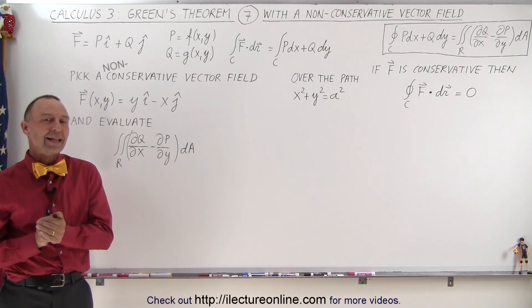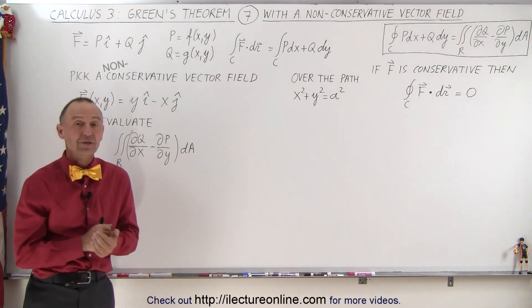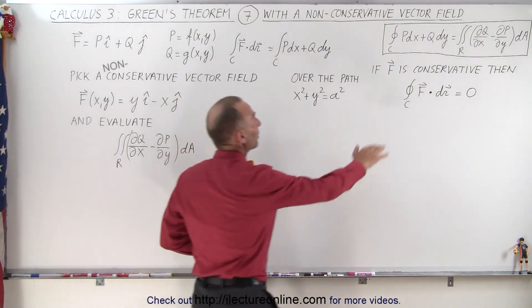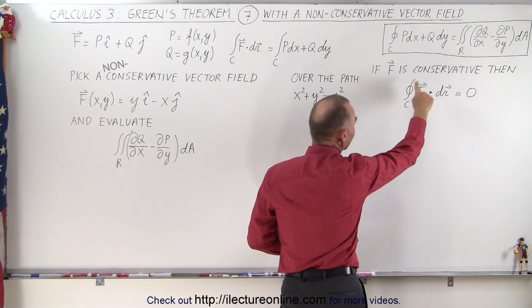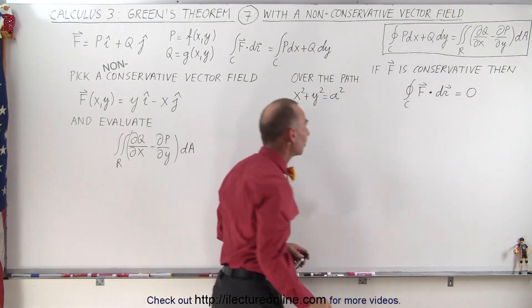Welcome to ElectronLine. Now let's take a look at what happens when we're dealing with a non-conservative vector field and we're trying to use Green's theorem. We have Green's theorem up here. Notice that if the vector field is conservative, then the line integral around any closed loop is indeed going to be zero.